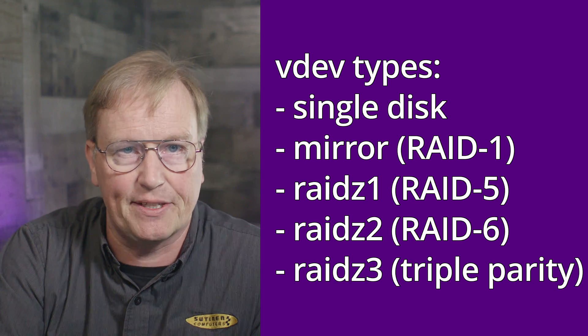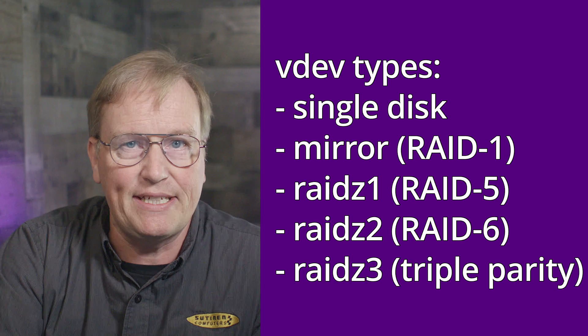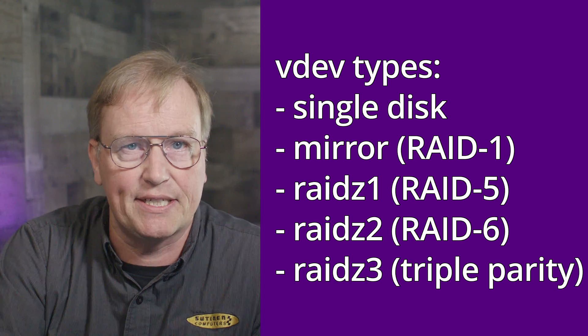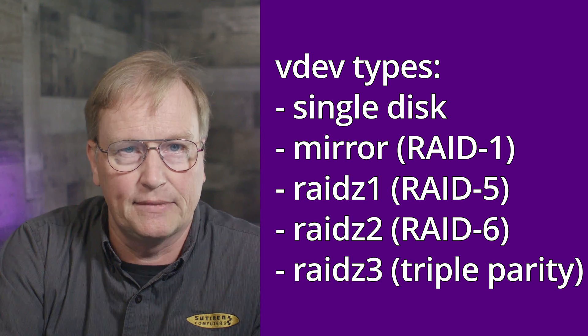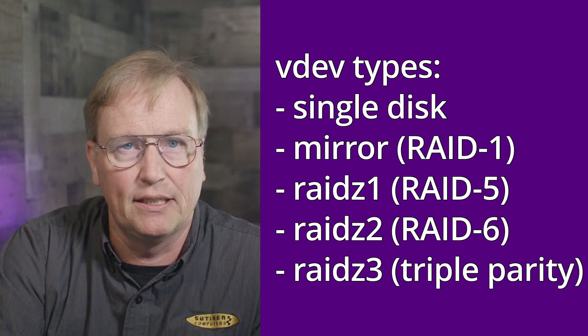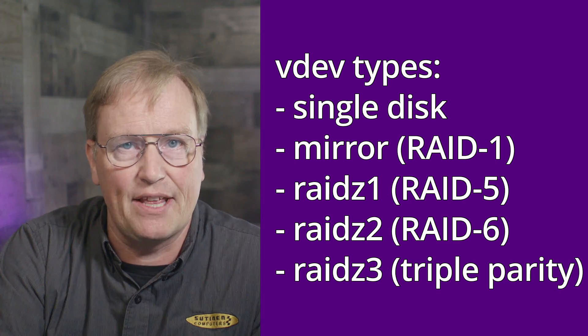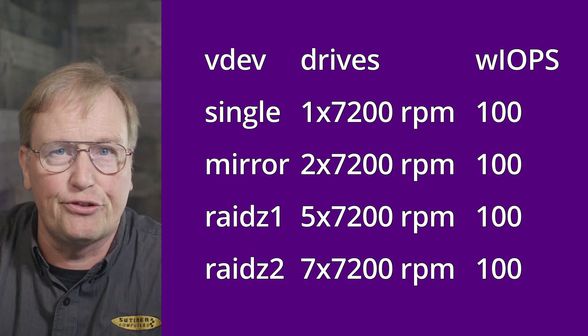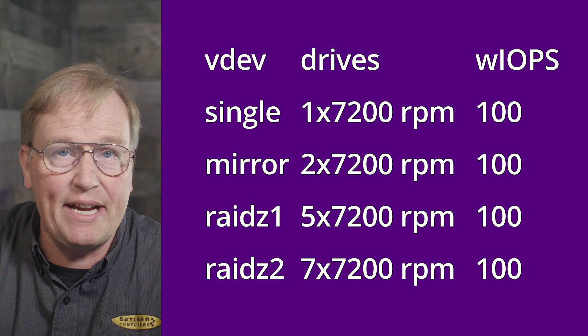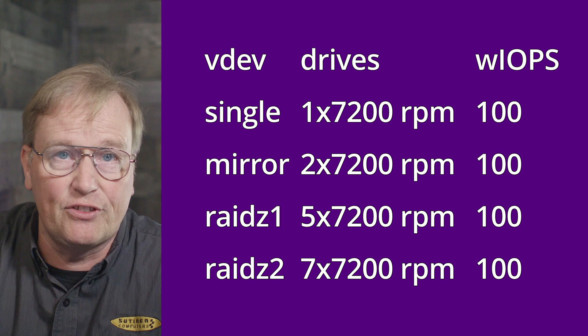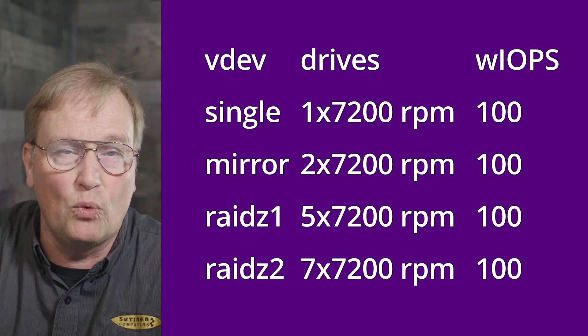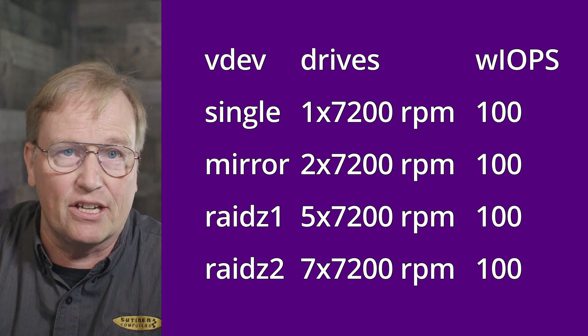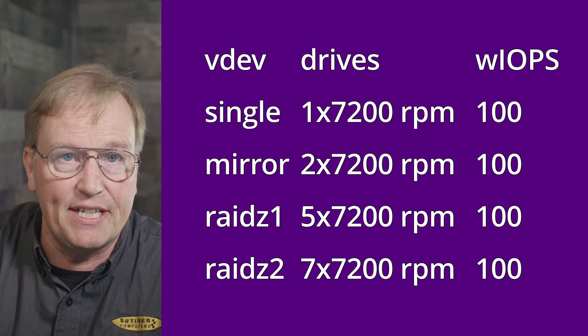RAID Z1 is called RAID 5 in other systems and offers single parity. RAID Z2 is called RAID 6 in other systems and offers double parity. ZFS even offers triple parity in a VDEV called RAID Z3. Here is a riddle to make a point about the importance of VDEVs: a Z pool with a single hard drive VDEV has as many RAID IOPs as a Z pool with two drives in a mirror VDEV, which has as many RAID IOPs as a Z pool with five drives in a RAID Z1 VDEV, which has as many RAID IOPs as a Z pool with seven drives in a RAID Z2 VDEV.